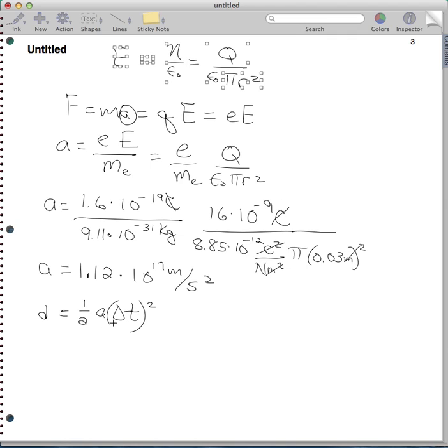So rearranging the equation, I can multiply both sides by 2 to get the, to bring the 2 over, and I can divide by a. So I have 2, I multiply it by 2, d over a, is equal to delta t. And now if I take the square root of that, right, then that'll give me what my delta t is.